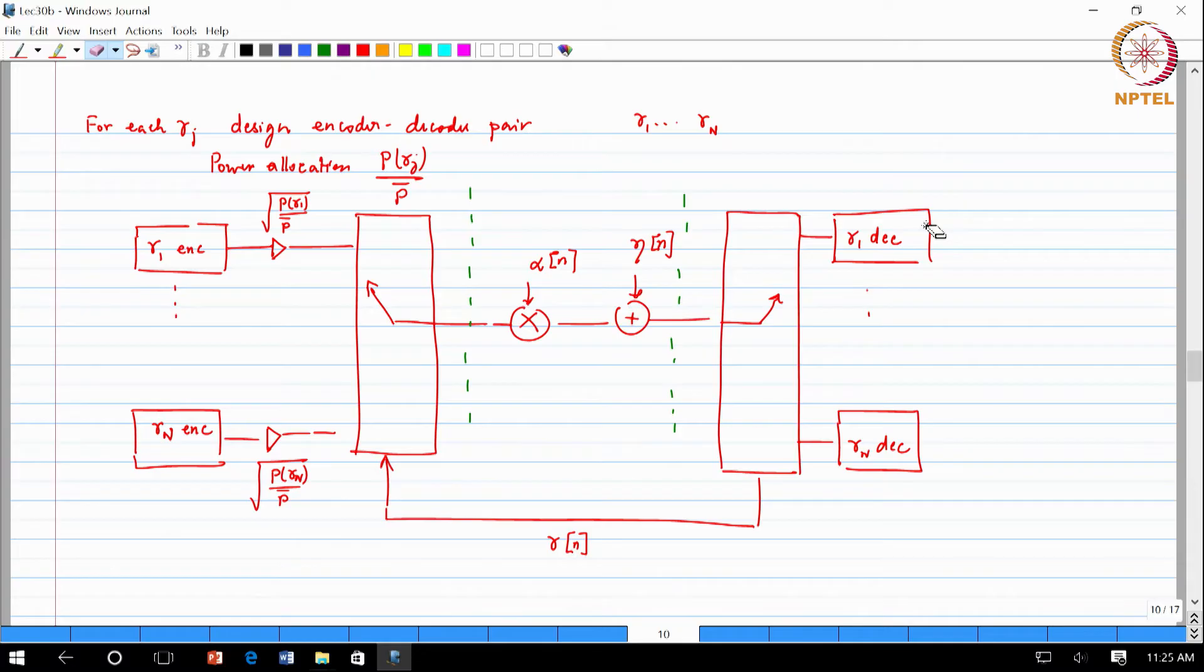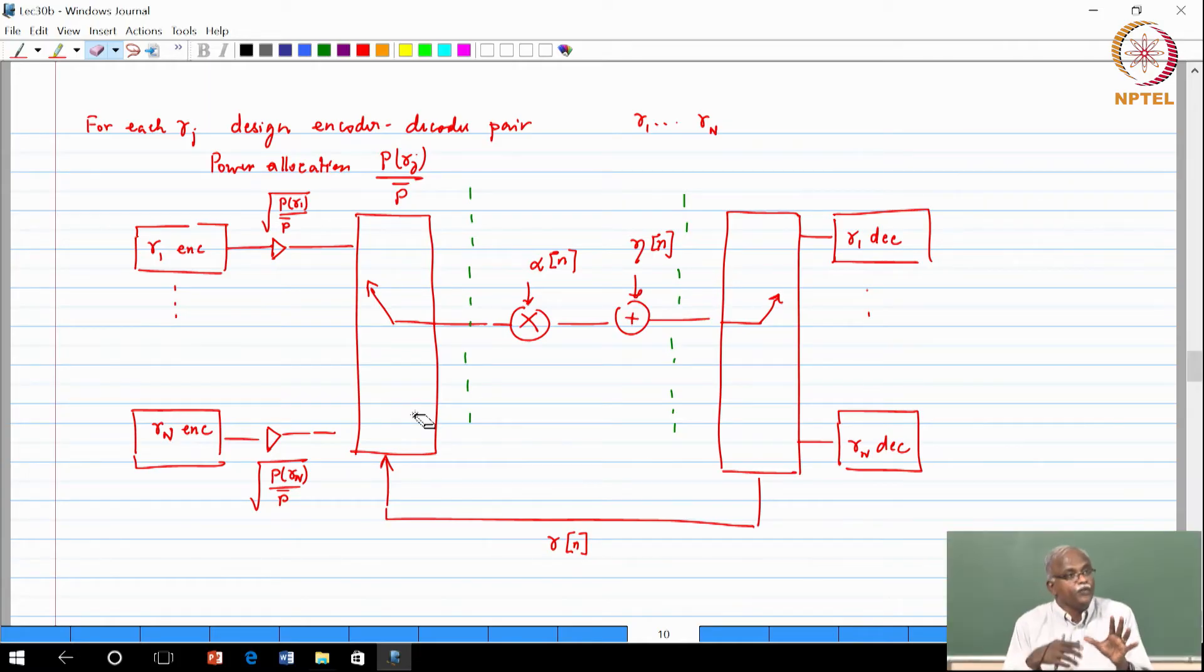If it is the best possible channel it is gamma n you choose that. Basically what you are doing is you are constantly switching between the different modulation encoding schemes so that you can get the maximum out of the channel. This is how with feedback we could get very good performance. Now is this part what we have indicated clear? Basically how do we achieve the capacity information in a channel where the SNR is changing?